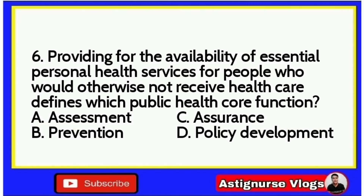Common board question number six: 'Providing for the availability of essential personal health services for people who would otherwise not receive healthcare defines which public health care function?' A. Assessment, B. Prevention, C. Assurance, or D. Policy development. The keyword is 'providing for the availability of essential personal health services.' Ensuring that health services are available for the people is under the assurance function. The correct answer is letter C — Assurance.